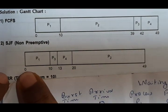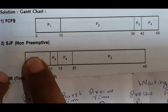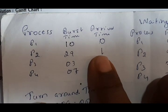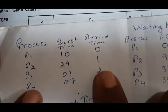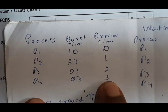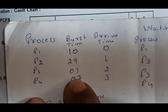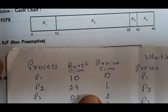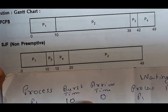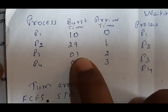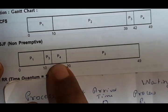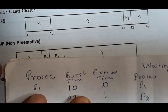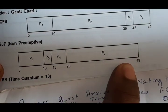So in SJF, P1 starts executing, and in non-preemptive mode it completely executes. After time 10, all processes are ready. Now it checks which has the least burst time — 3 is the least, so it executes P3 for 3 milliseconds. Then next is 7, so it executes P4 for 7 milliseconds. Last is P2 with burst time 29. So P2 executes from 20 to 49.